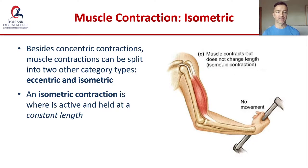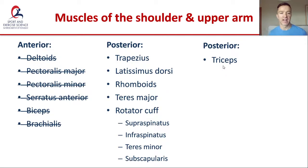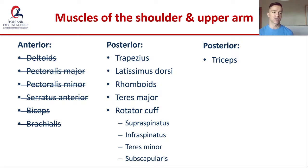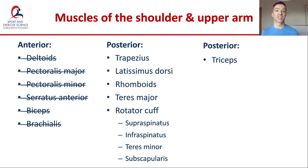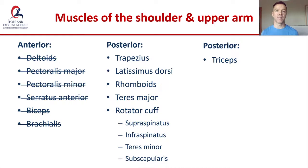Moving on — last week we looked at muscles of the shoulder and upper arm on the anterior surface: the deltoids, pectoralis major and minor, serratus anterior, biceps and brachialis. Today we're going to stay on the upper body and shoulder girdle, focusing on muscles on the posterior surface. We're going to look at the trapezius, the lats, the rhomboids, the teres major, the rotator cuff — a group of four muscles — and then the triceps, which is on the back of the upper arm.